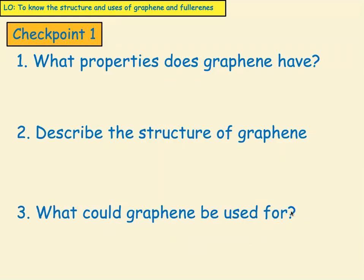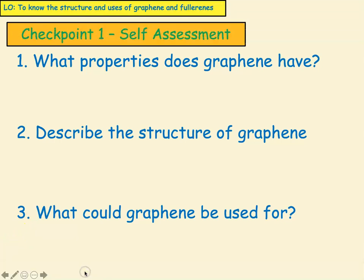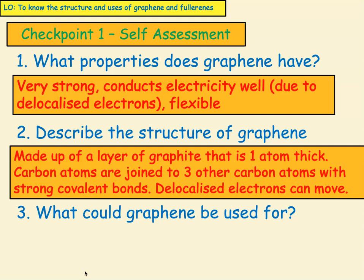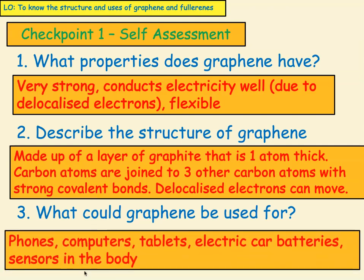Pause the video now and answer these questions, then come back. Let's self-assess. What properties does graphene have? Graphene is very strong, conducts electricity well due to the delocalised electrons, and it's flexible. To describe the structure of graphene: it's made up of a layer of graphite that is one atom thick — the carbon atoms are joined to three other carbon atoms with strong covalent bonds, and the delocalised electrons are left over and able to move. What could graphene be used for? We can use it for phones, computers, tablets, electrical car batteries, and sensors in the body.